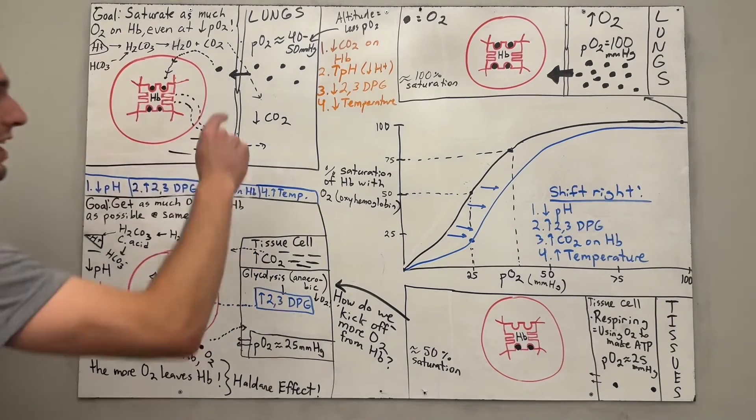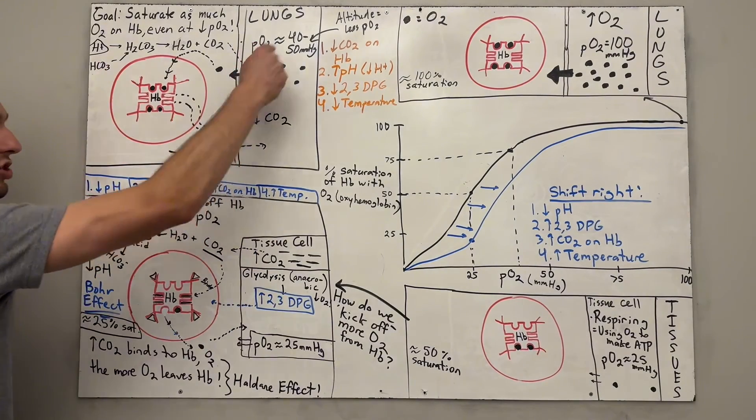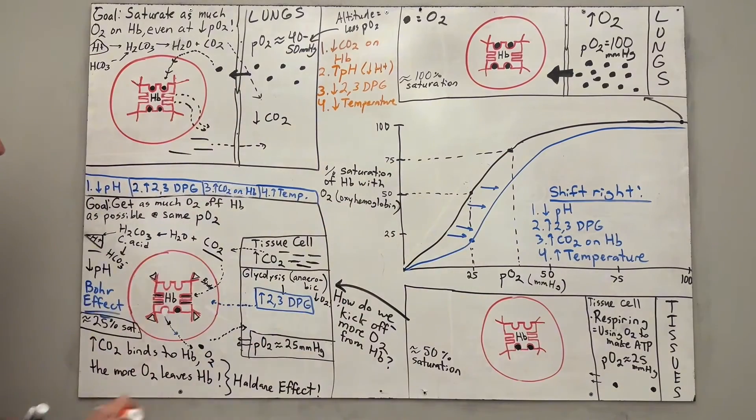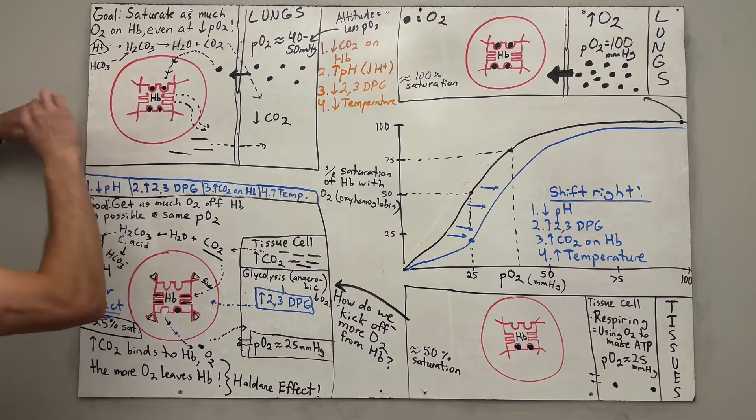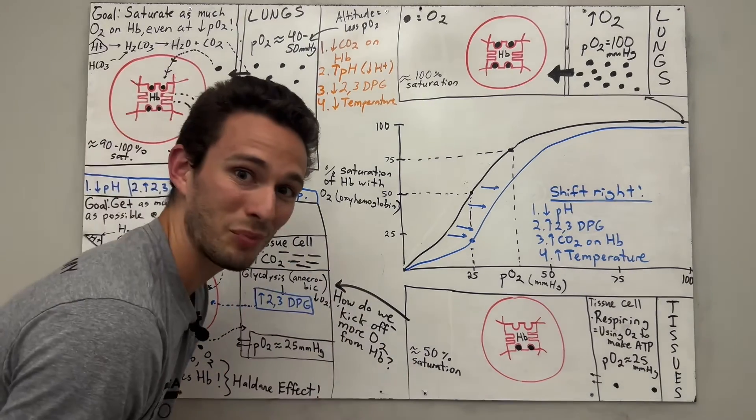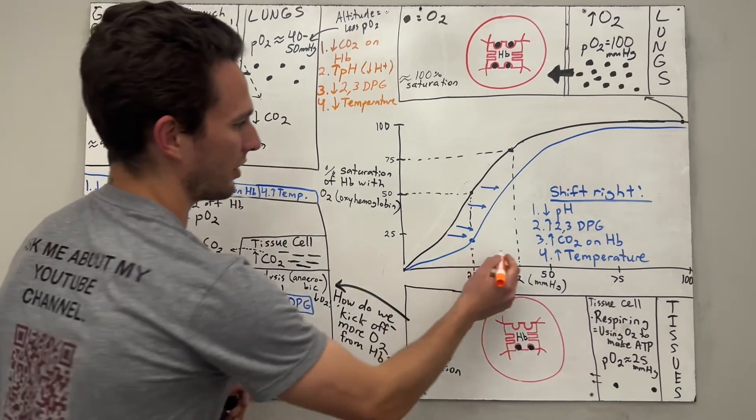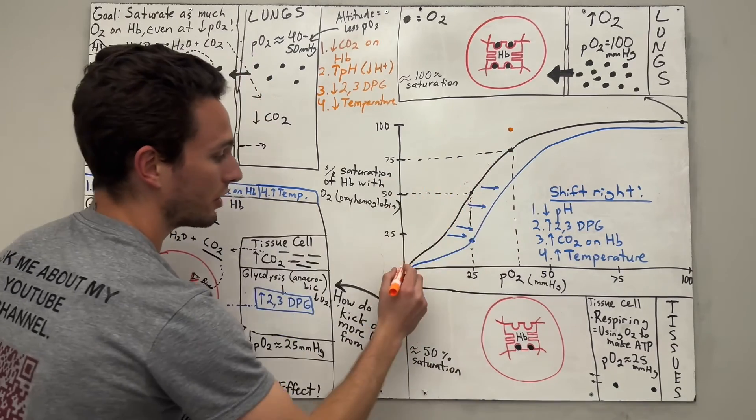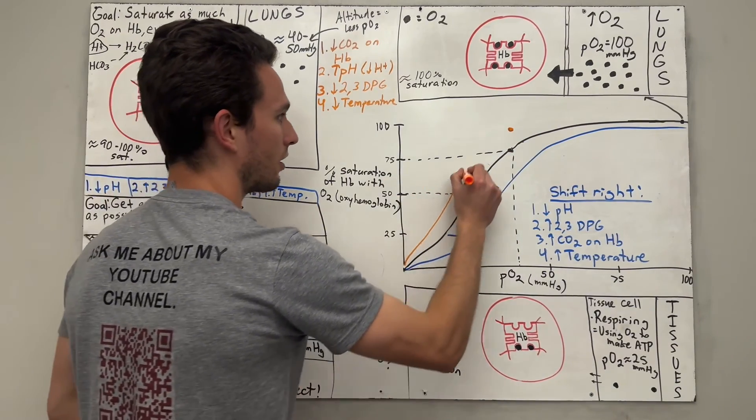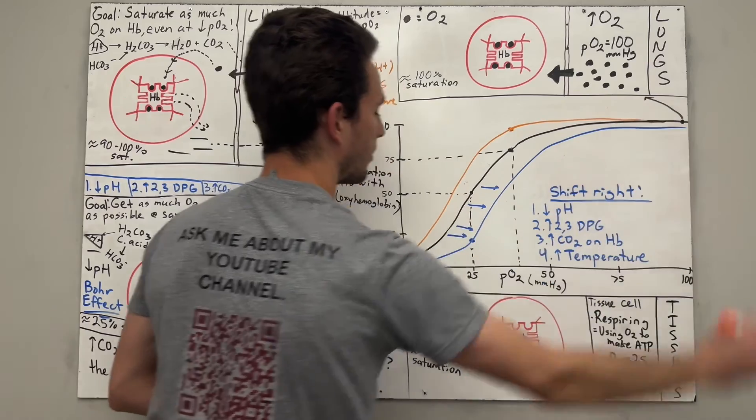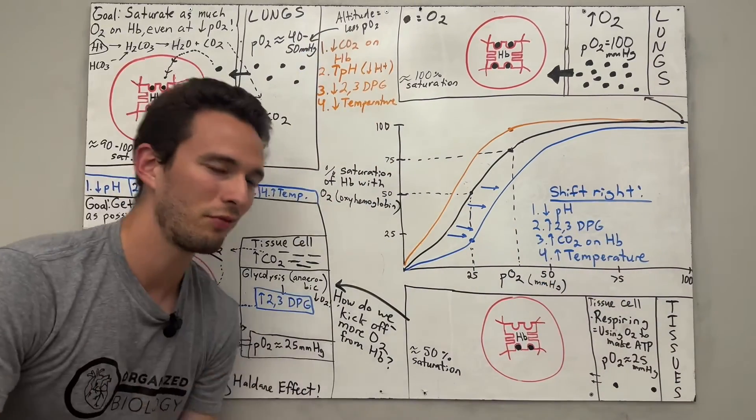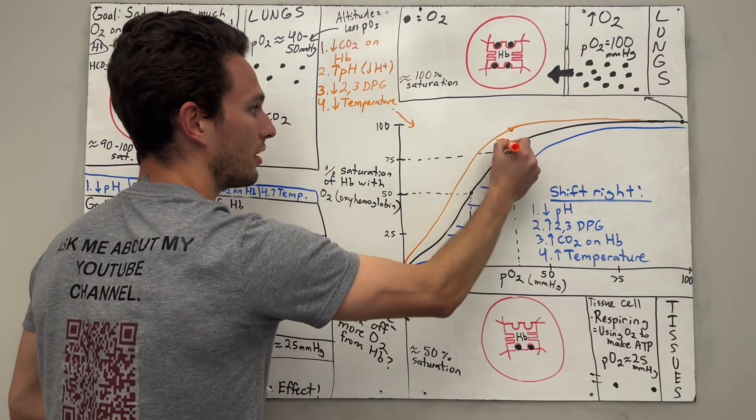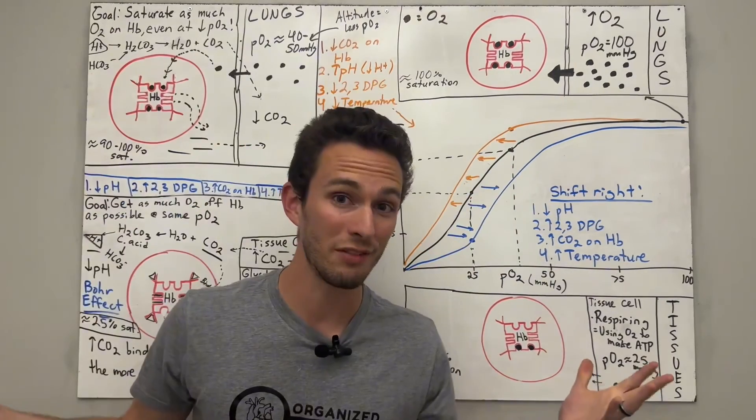So now keep in mind, we kept the same partial pressure of oxygen of that 40 to 50, and we found the point right about there. But now we have near 100% saturation, right? So where would that point be? Well, you'll see that it'll actually raise to about right here. And if we fill in the graph, it'll look like this. So therefore, all of these four factors did what to the graph? It shifted it to the left.